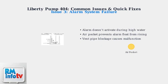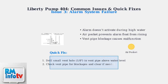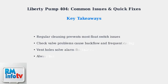Alarm system failures typically occur when an air pocket forms in the vent pipe, preventing the alarm float from rising properly during high water conditions. This leaves you without warning when water levels become dangerously high. The solution is to drill a small vent hole — about one-eighth inch diameter — in the vent pipe above the maximum water level. This allows trapped air to escape and ensures proper alarm float operation. Also check for and clear any blockages in the vent pipe.